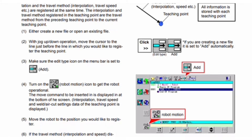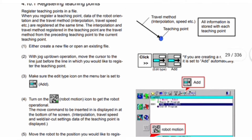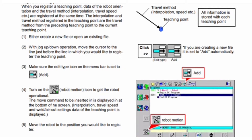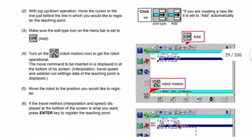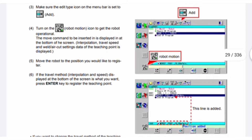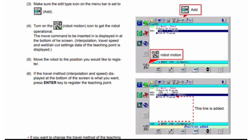Interpolation, travel speed, and weld/air cut settings data of the teaching point are displayed. Fifth, move the robot to the position you would like to register. In the diagrammatical view, you can see the teaching point, travel method, interpolation, speed, etc. — all information stored with each teaching point. The edit type is set to Add automatically when creating a new file.